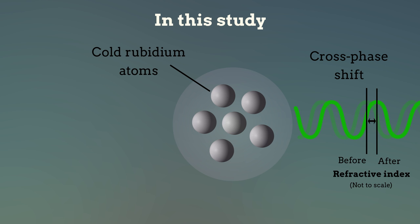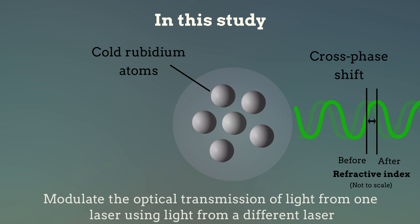As such, the researchers could modulate the optical transmission of light from one laser using light from a different laser, a function desirable for creating a quantum logic gate.